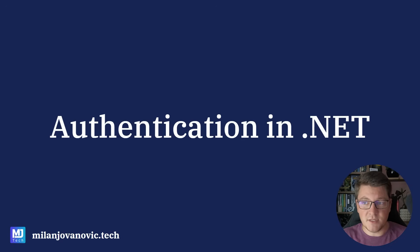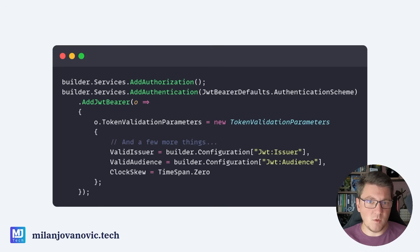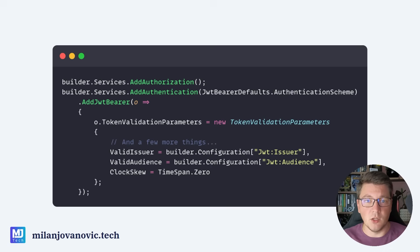In order to implement this in a .NET application, we can leverage the existing support for authentication. We already have authentication and authorization services. The only additional thing we're going to need is to introduce support for JSON Web Tokens. We're going to tweak the token validation parameters slightly, and I'll show you what are the correct values to set for the issuer, audience, and some other options that we will need to configure in order to integrate correctly with Keycloak.